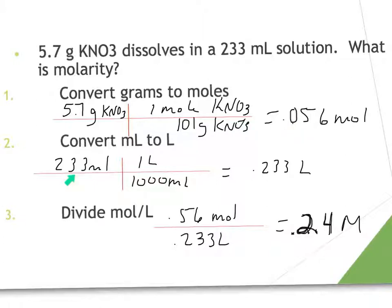We take our 233 milliliters and convert that to liters. One liter equals 1,000 milliliters, giving us 0.233 liters. We divide our moles — 0.056 moles — by our liters, and we have an answer of 0.24 molarity.